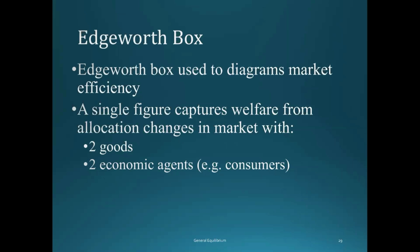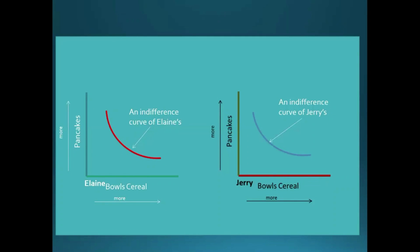What we want to do is look at two different consumers in the market, each of which is getting some number of each of the two goods. So let's revisit what we looked at earlier in this class when we looked at indifference curves. We had these indifference curve graphs or maps where we plotted for a given individual the amount of one good that they have versus the amount of the other good.